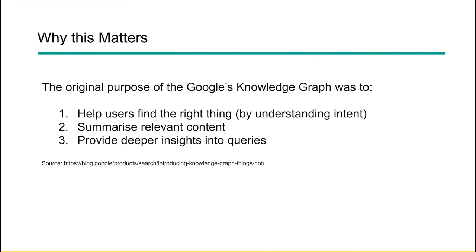So why does this matter? The original purpose of Google's knowledge panel was to help users find the right thing — understanding intent. This is something we've talked about a lot: creating content that matches user intent. The second purpose was to summarize relevant content, typically using summarization of Wikipedia pages. And then they also want to provide deeper insights into queries, where you can click deeper into content, maybe discover things you didn't know about or connections you weren't aware of, or narrow down your search to really get to the original intent of why you started making that search.